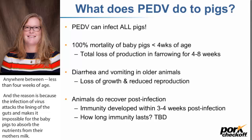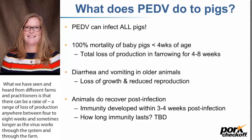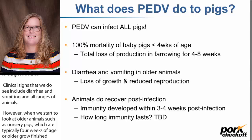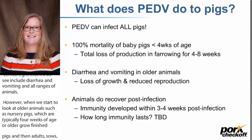Clinical signs include diarrhea and vomiting in all ages of animals. However, when we look at older animals — such as nursery pigs four weeks of age or older, grow-finish pigs, and adults like sows and boars — we don't see the death loss associated with PED, but the animals do experience a loss of growth performance, and we can also see an impact on reproduction. Mortality is more confined to neonatal or baby pigs.